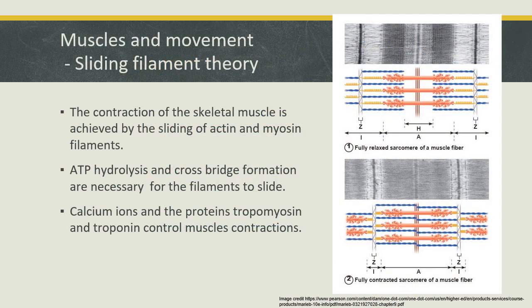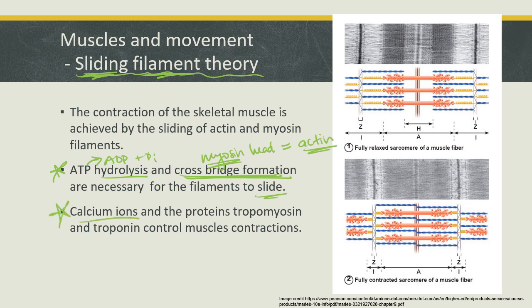How this happens is referred to as the sliding filament theory — the actin and myosin filaments slide against each other. This involves lots of ATP. ATP hydrolysis breaks ATP down into ADP and inorganic phosphate. Cross-bridge formation is when the myosin heads bind to the actin, which allows those filaments to slide against each other. This all happens because calcium ions make it go.